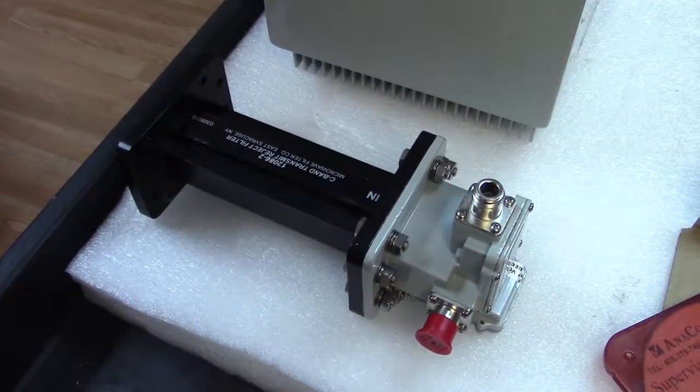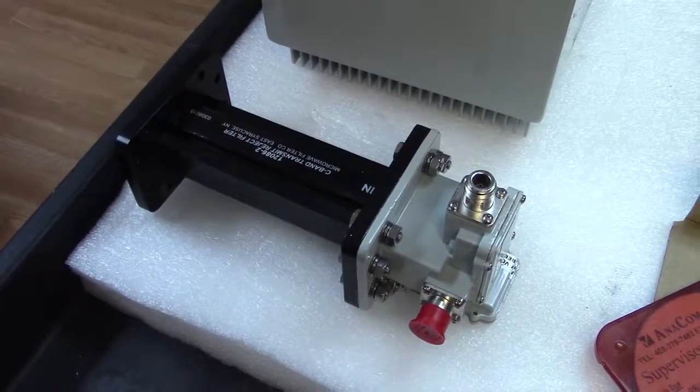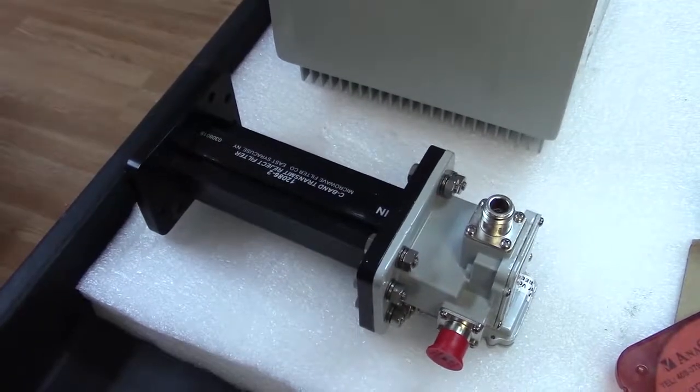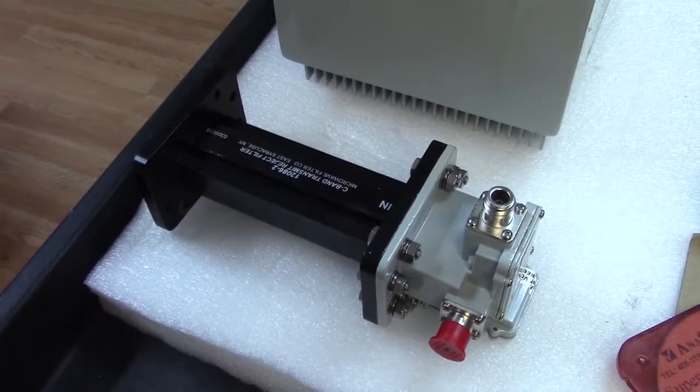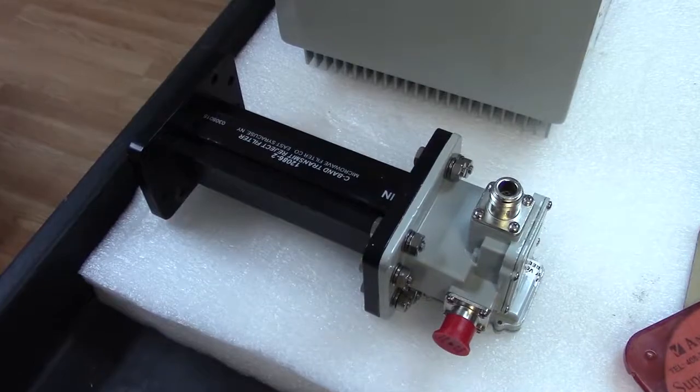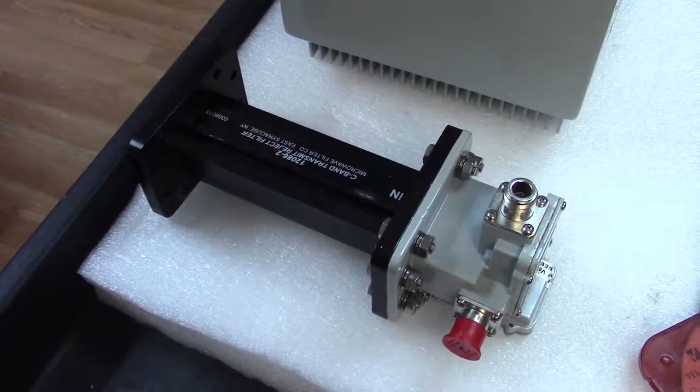This is Anacom's version of an LNA or LNB. They call it an LNC and it is specific to Anacom transceivers. It also comes with a transmitter reject filter, that long black thing.